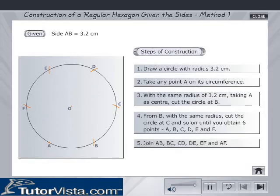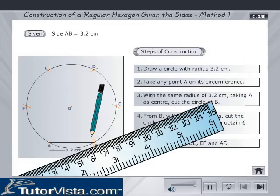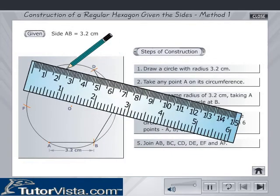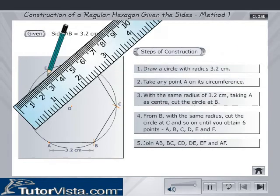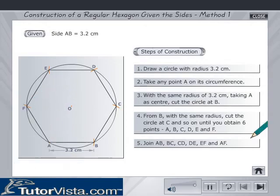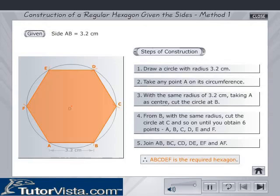E and F. Join AB, BC, CD, DE, EF and AF. Therefore, ABCDEF is the required hexagon. Click on the Home button or the Next button.